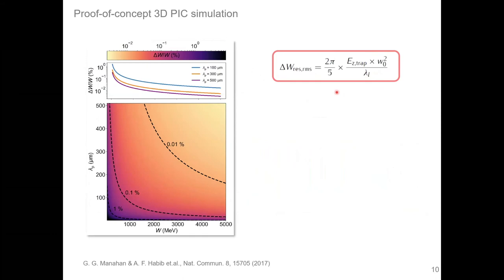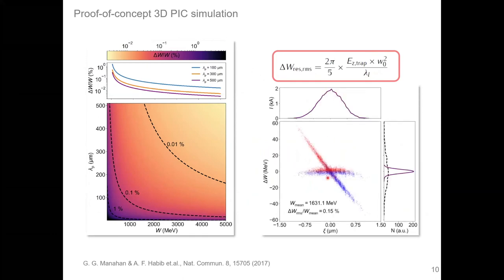We then asked: where does this residual energy spread come from after compensating the energy chirp? VSim's tracking tools helped us understand the origin of this residual energy spread, and we derived from that a very simple scaling law to estimate the energy spread reach for plasma photocathode electron beams. Larger blowout sizes are not only beneficial for beam stability but also allow very small relative energy spreads at comparably low energy. For example, at 1.6 GeV electron beam energy with the escort beam de-chirping method, you can obtain energy spread far below the 1% level — approximately the order required for FEL applications.